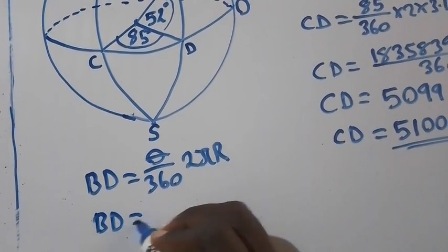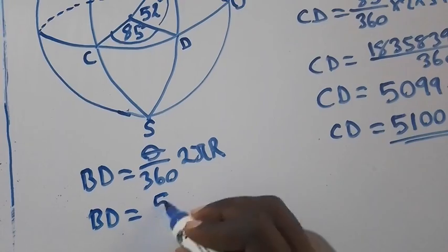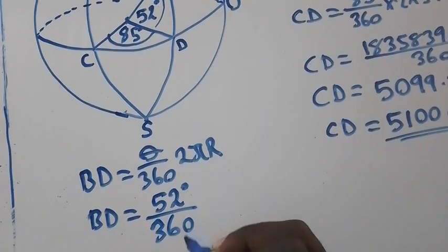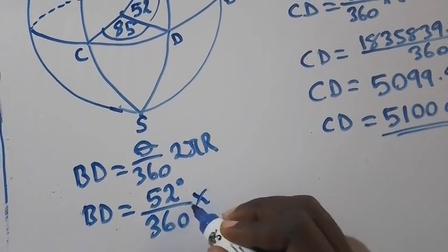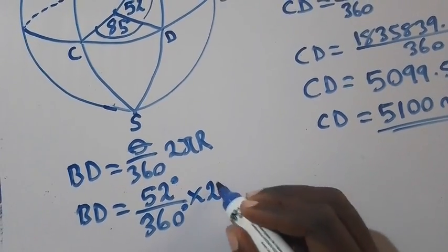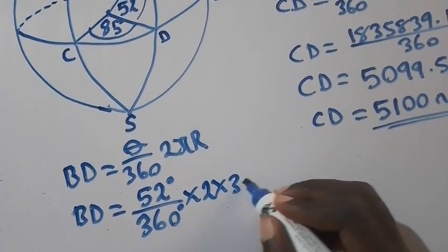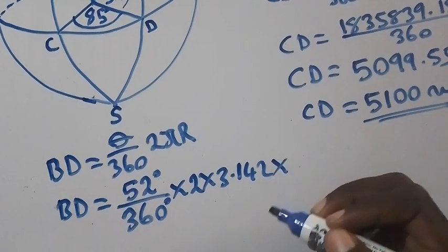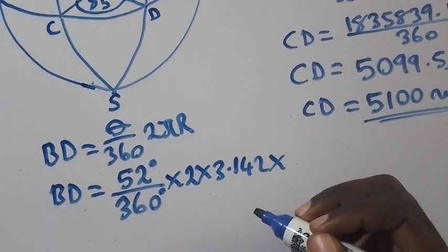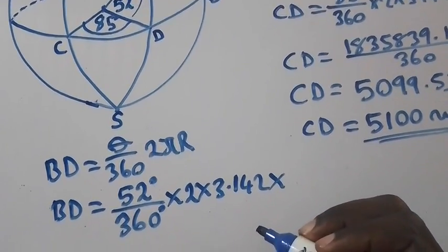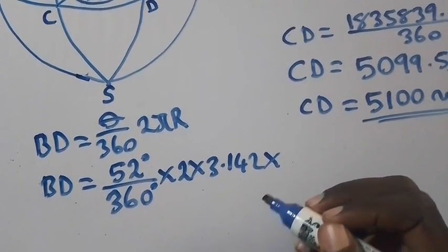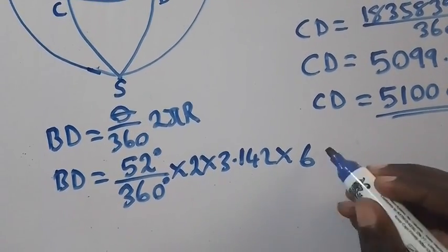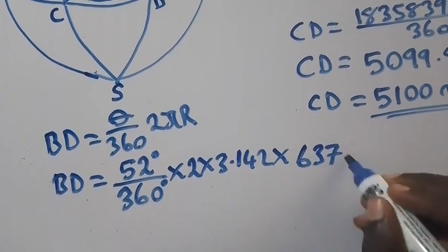So BD equal to, we have 52 degrees over 360 times 2 times 3.142 times radius. Now this time we have to use radius in kilometers, so radius in kilometers is 6,370 kilometers.